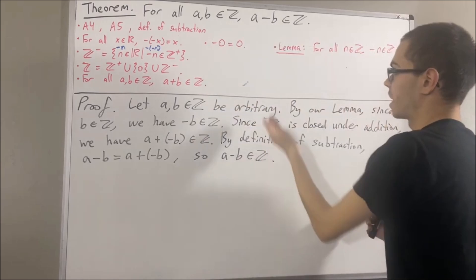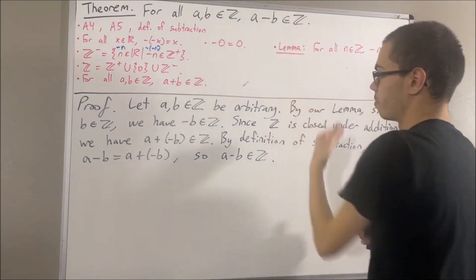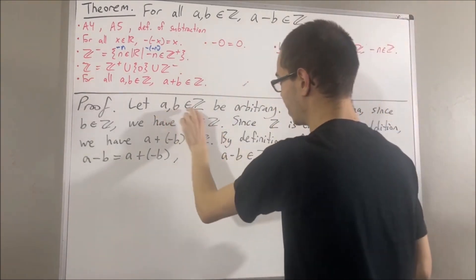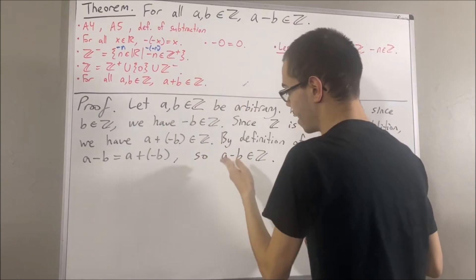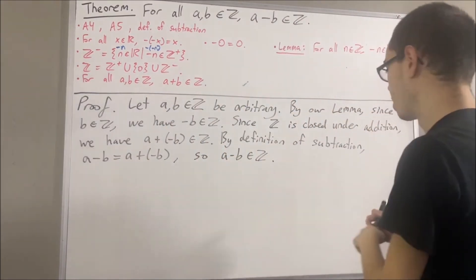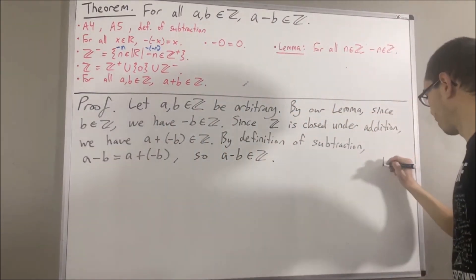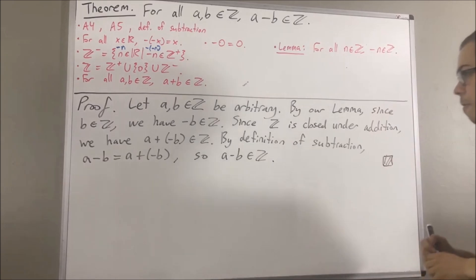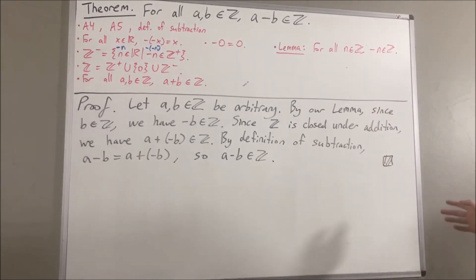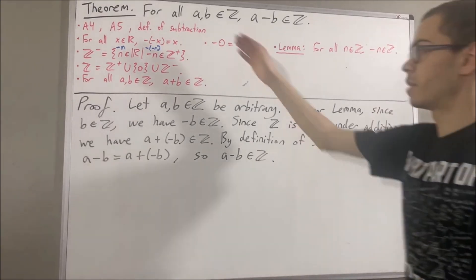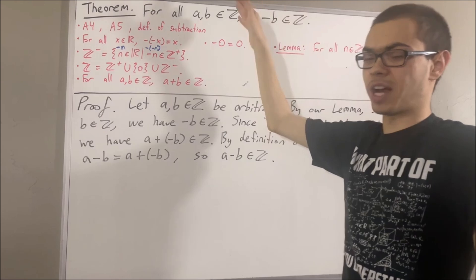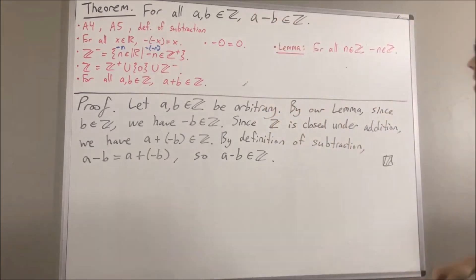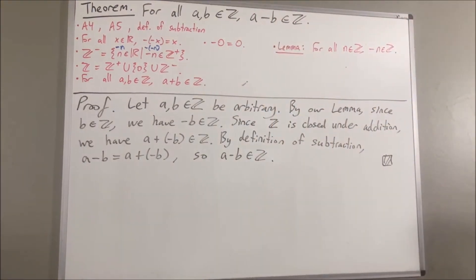That is exactly what we wanted to show. We have shown that if a and b are any two integers, then a minus b is an integer. This completes the proof. Another way of saying this is to say that the integers is closed under subtraction. And that's pretty much it for this video.